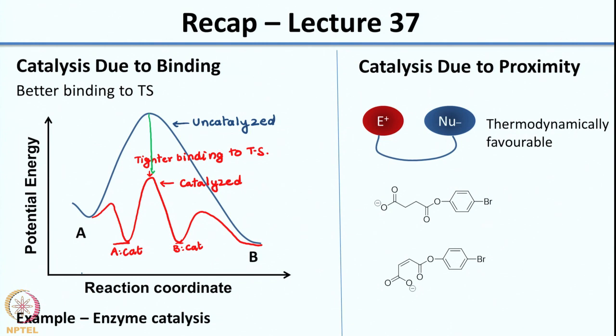We had looked at a few examples. Even among intramolecular reactions — these are called intramolecular because both components are part of the same molecule — what you see is if you have a linker joining the electrophile and nucleophile, and you change the linker such that it forces the 2 reactants to come closer to each other, you see a greater enhancement of rate. Essentially you can play around with this proximity effect by designing suitable linkers which actually help the reaction.